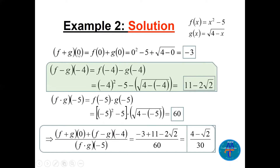(f+g)(0) = f(0) + g(0). Replace 0 in f: we get −5. Replace 0 in g: √4 = 2. So the answer is −3. For (f−g)(−4): f(−4) − g(−4). f(−4) = (−4)² − 5 = 11. g(−4) = √(4−(−4)) = √8 = 2√2. So (f−g)(−4) = 11 − 2√2.